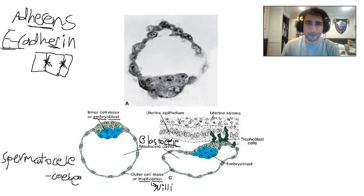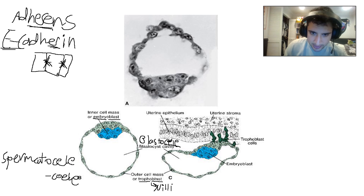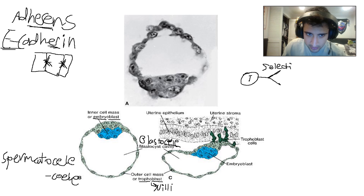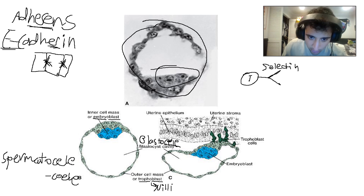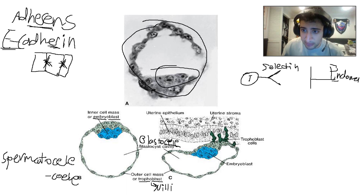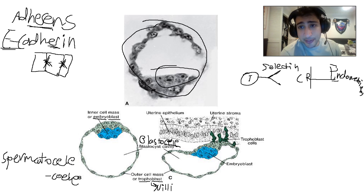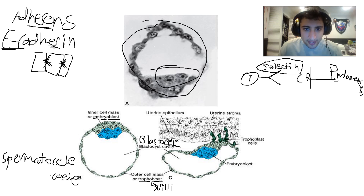The cells of the inner cell mass give rise to the embryo. The cells of the outer cell mass give rise to the villi — those are the trophoblasts. The trophoblasts will recognize the uterine stroma because they express a molecule called a selectin. The trophoblasts express selectin, and selectin recognizes glycoproteins on the endometrium. The uterine epithelium expresses carbohydrate receptors, and the selectin is specific to those. I'm mentioning this because selectins are also important for white blood cell recruitment, which I'll discuss on the next slide.